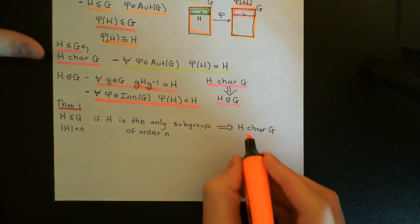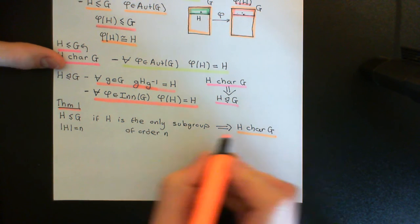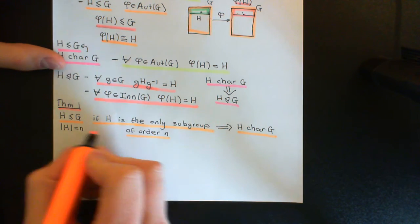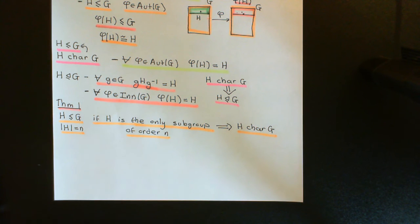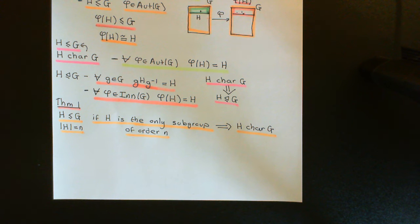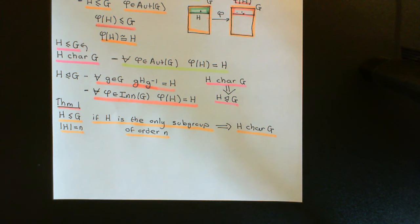To check that H is a characteristic subgroup of G, we need to ask whether it will be fixed by all automorphisms of G. If we take an arbitrary automorphism of G and consider what it maps H onto, we know it must map H onto a subgroup of G with the same order. But since H is the only subgroup of that order, there is only one option — it can only be mapped onto H itself. That is why having only one subgroup of that order lets you instantly conclude it is characteristic in G.